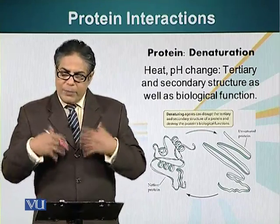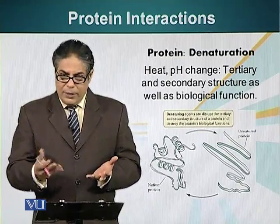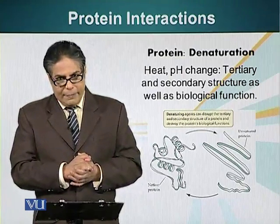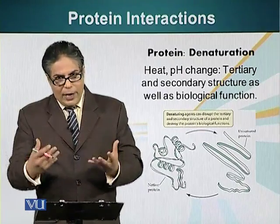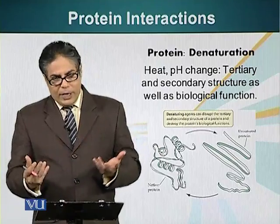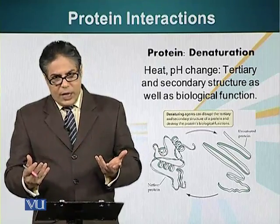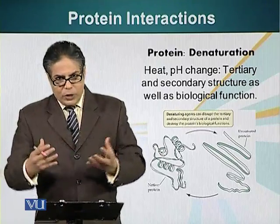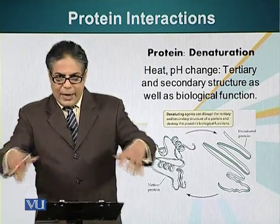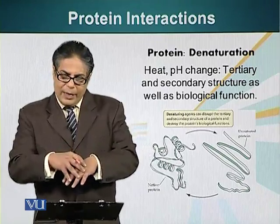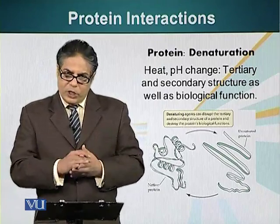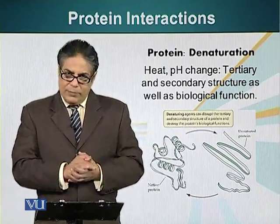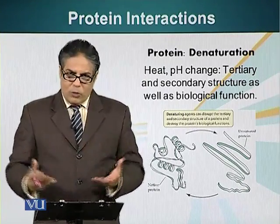Proteins precipitate out. That's what happens when you boil an egg — the protein is denatured. It is no longer in its original shape and it cannot fold back to its original shape, and it precipitates out. It is no longer soluble.